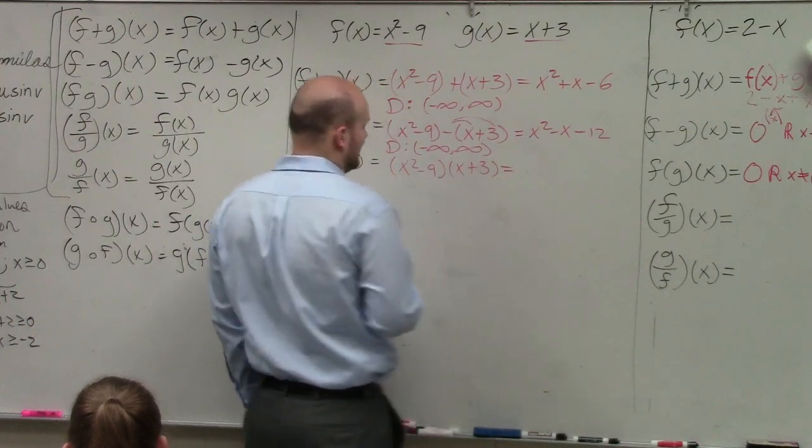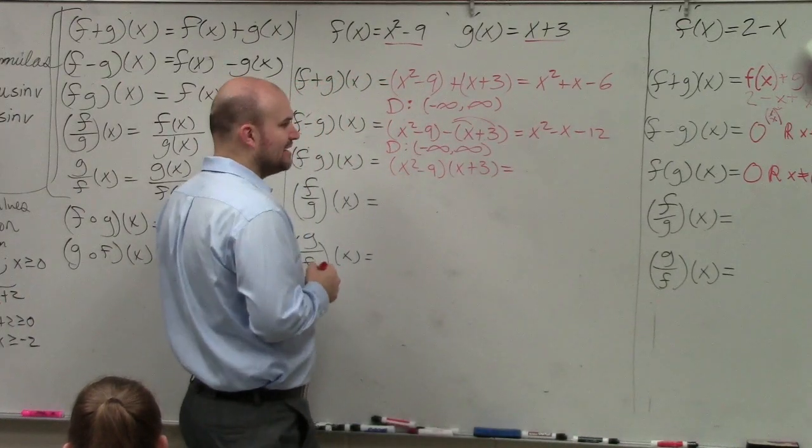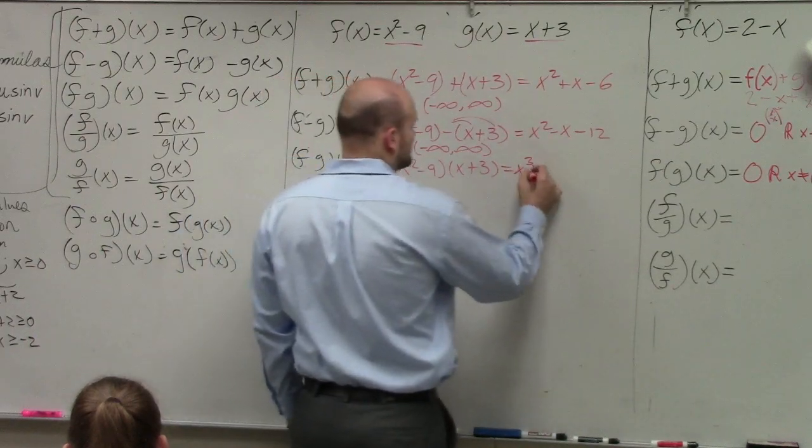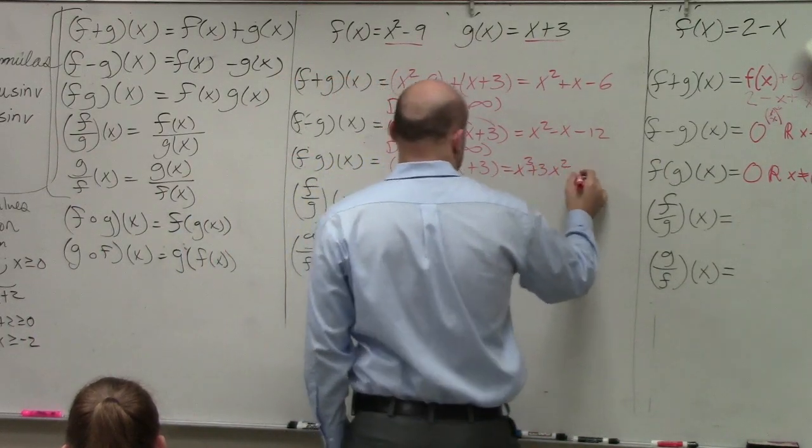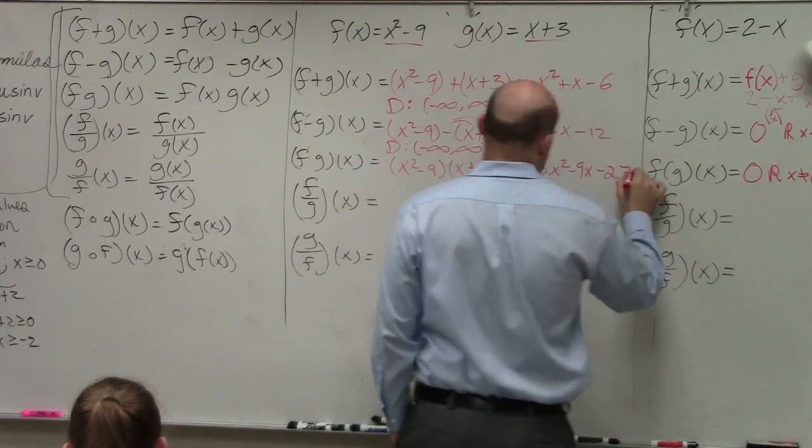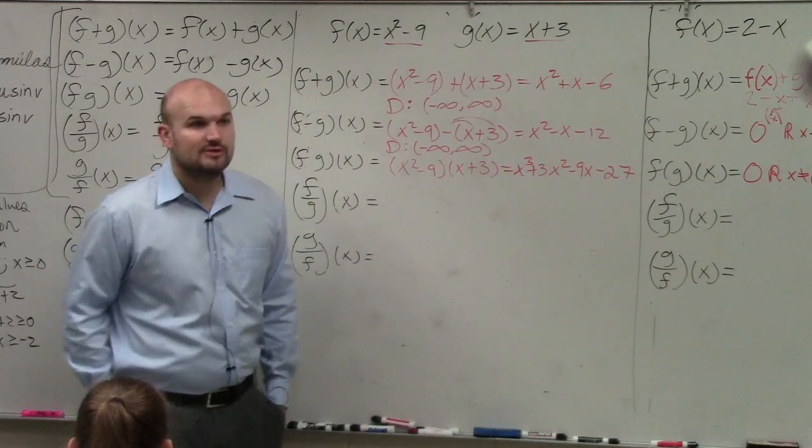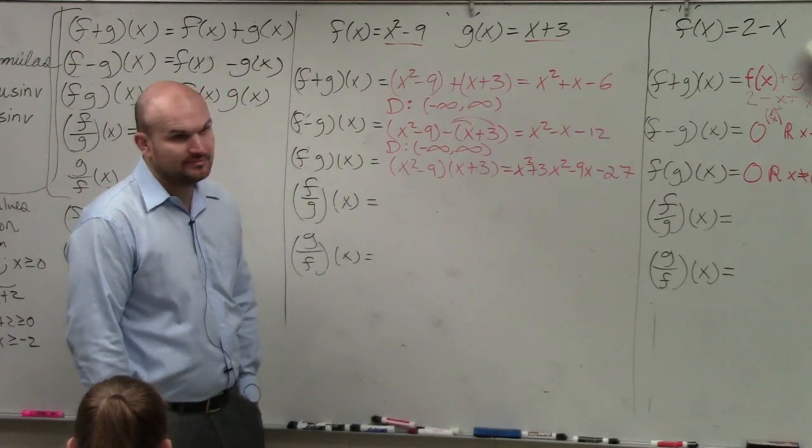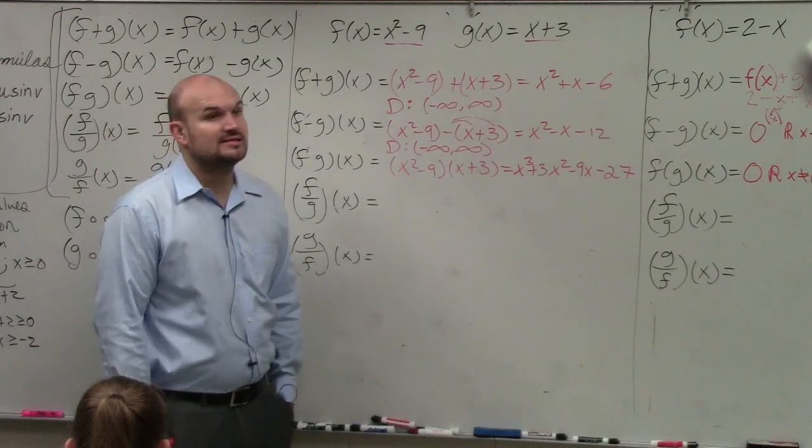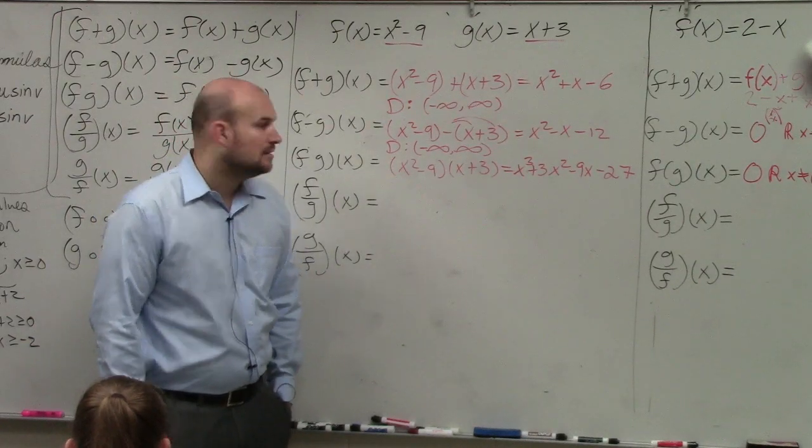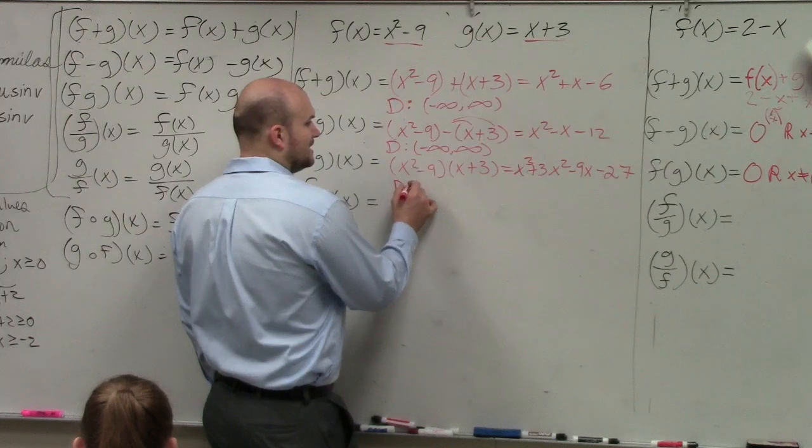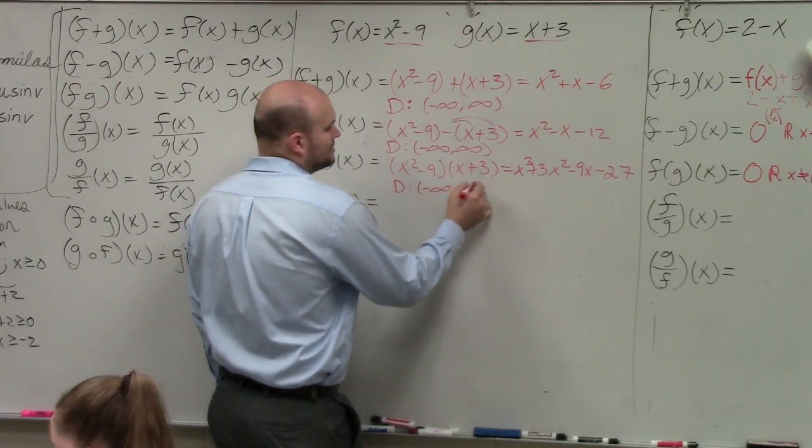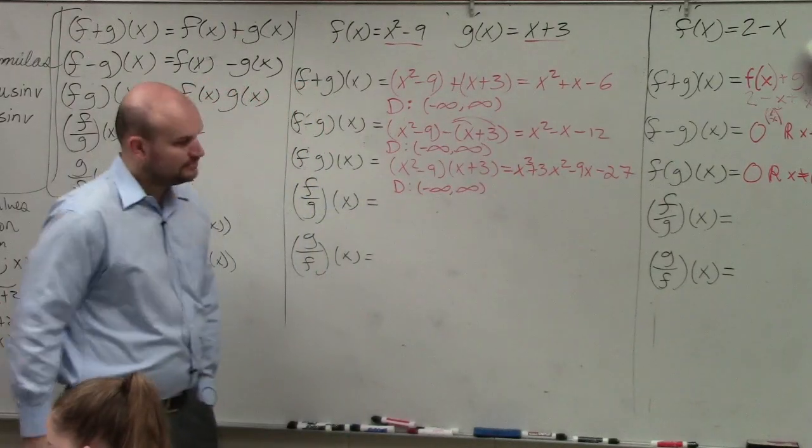So by doing FOIL, I'll do FOIL in my head, but you guys might need to write it out. You'll have x cubed plus 3x squared minus 9x minus 27. Are there any like terms I can combine? Nope. Is there anything in the denominator? No. So guess what? My domain is going to equal negative infinity to infinity.